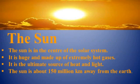The sun is in the center of the solar system. Although it is just a medium-sized star, it is huge in comparison to the other members of the solar system and is made up of extremely hot gases. It is the ultimate source of heat and light. The sun is about 150 million kilometers away from the Earth.